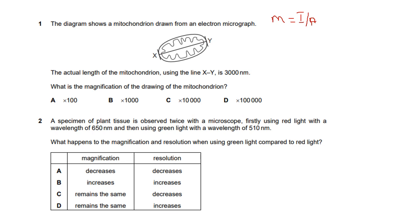The actual length given is 3000 nanometers. Since magnification has no units, you can work with whatever unit you're given. To get the image size, you use your ruler to measure the length from point X to Y. Before recording, I did that measurement and got 3 centimeters, so my image size equals 3 centimeters. Obviously I can't divide 3 centimeters by 3000 nanometers directly — I need to convert centimeters to nanometers.